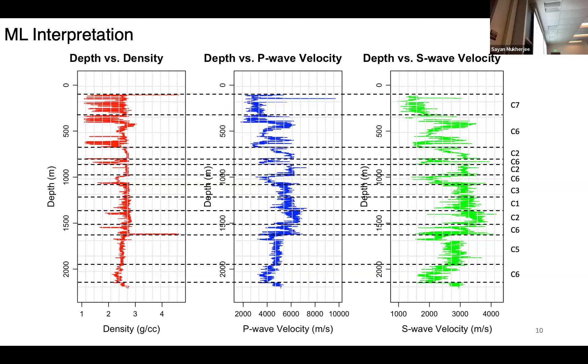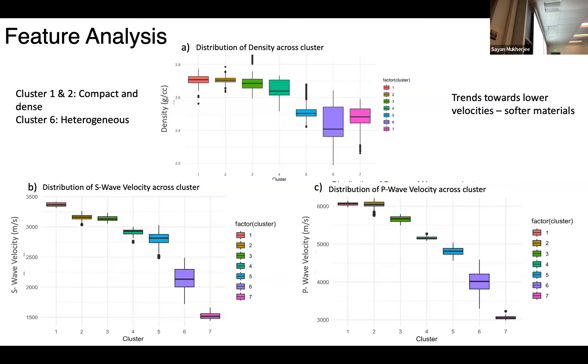But it doesn't mean anything till we don't assign any geological meaning to these clusters. Moving on, assigning geological meaning to these clusters, we did some summary statistics and we see some box plots. What these box plots show us is, for example, for cluster one, we see that these box plots have a bit of a tight distribution.